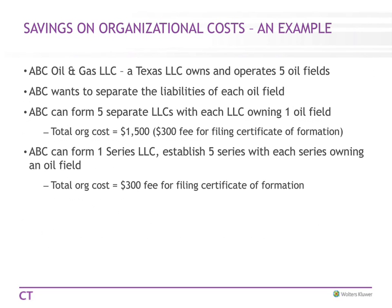Here's an example of how organizational costs can differ. An oil company has a Texas LLC that owns five oil fields. They can either form five separate LLCs, each owning one field, with a total organizational cost of about $1,500 — or they can form a Series LLC, establish five series, one per oil field, with a total organizational cost of $300. As you can see, there's a large difference.